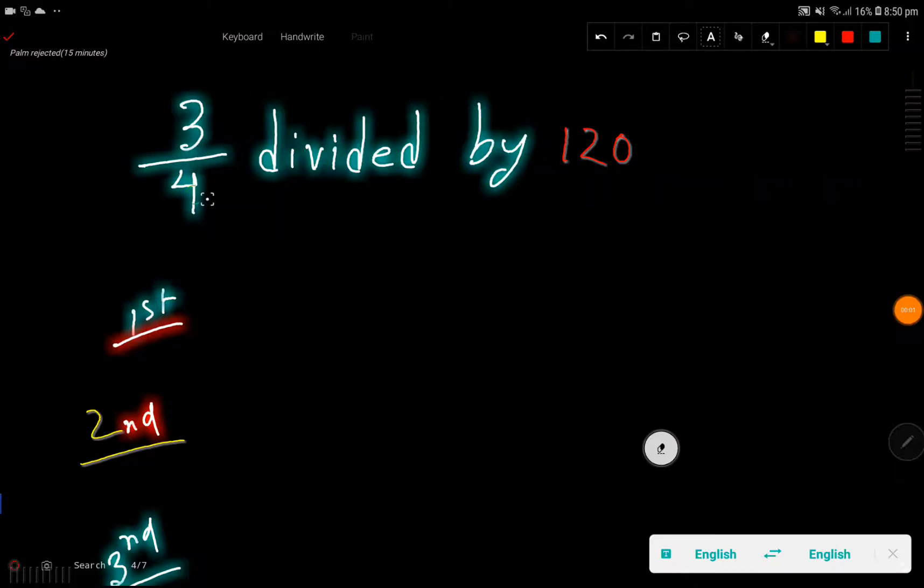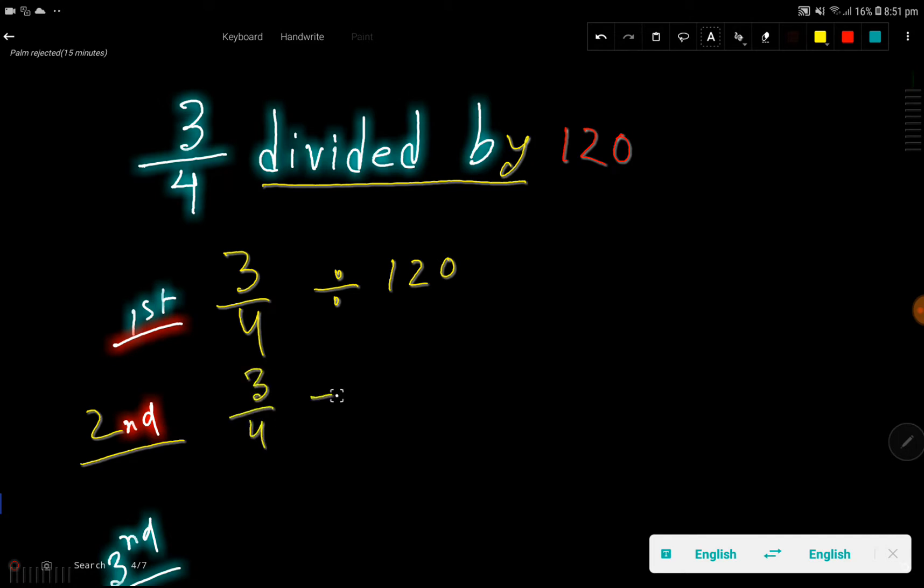3 over 4 divided by 120. So let me, in the first step, I will just translate this thing. So 3 over 4 divided by, means this division sign, then 120.